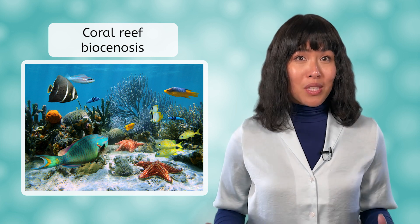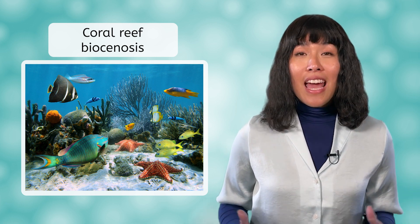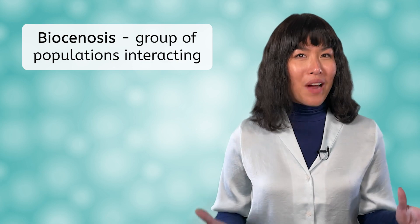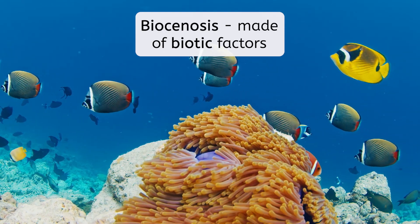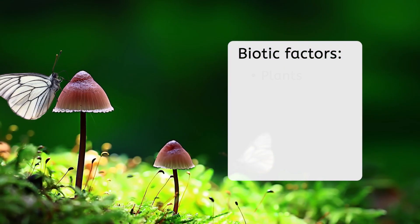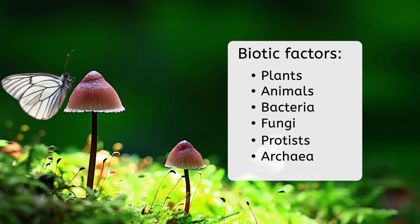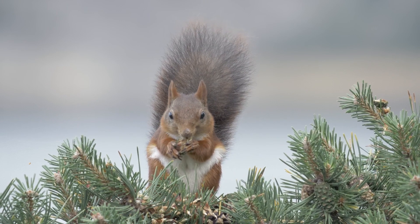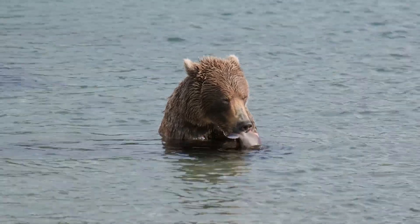This coral reef biocenosis contains many living things: sea stars, many species of colorful fish, and coral. A biocenosis is a group of populations living in the same area and interacting. The living parts that make up a biocenosis are called biotic factors — remember that the prefix 'bio' always means living. These biotic factors could be plants, animals, bacteria, fungi, even protists and archaea. All living things need energy, so the food webs we looked at last time all occur within a biocenosis, so that energy can flow from one trophic level to the next, right up the food chain.